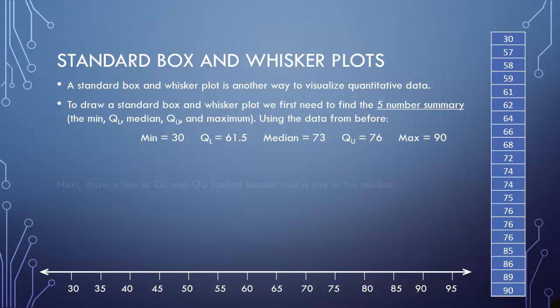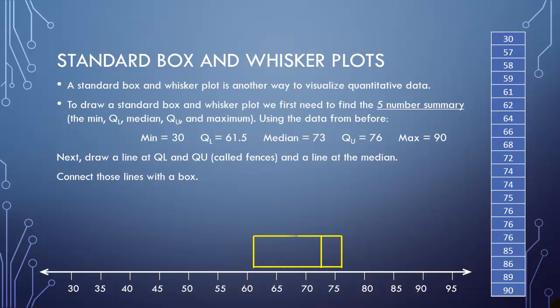We're going to draw a line at QL and QU. These are called fences. And then also draw a line at the median. Next, we're going to connect these lines with a box shape. After that, we're going to draw our whiskers, and these connect our box to the maximum and to the minimum. The maximum was 90, so we can draw a line to that. The minimum was 30, so we'll draw a line to that. And that's it. That's a box and whisker plot.